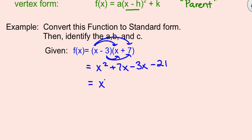We'll go ahead and combine our middle terms with our like terms, 7x minus 3x is 4x. So what we've done is we've taken our quadratic equation that is in factored form, and we've converted it to standard form.